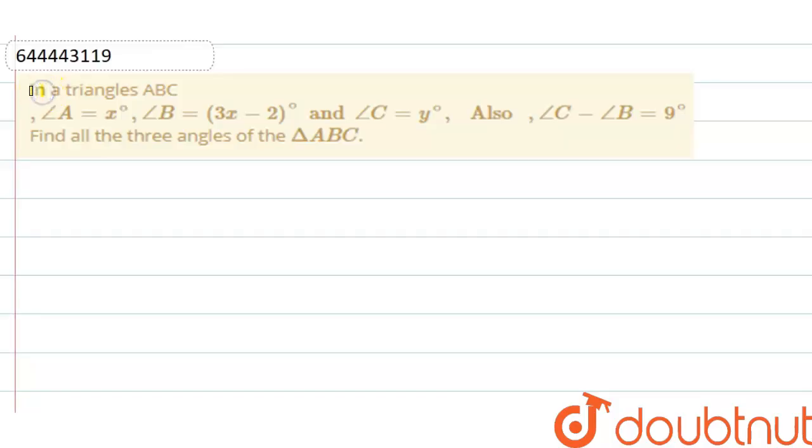Hello friends, question is: In a triangle ABC, angle A equals x degree, angle B equals 3x minus 2 degrees, and angle C equals y degree. Also, angle C minus angle B equals 9 degrees. Find all the three angles of the triangle ABC.